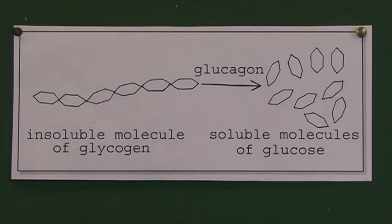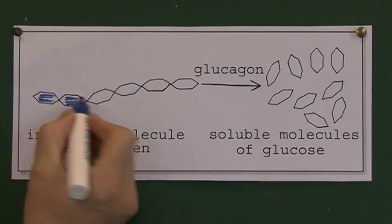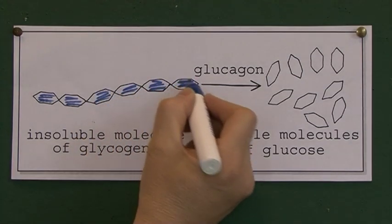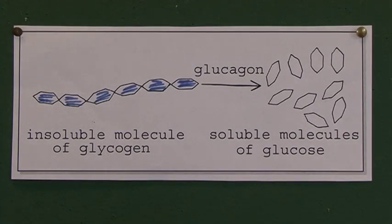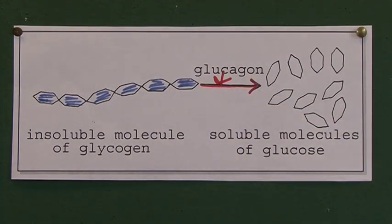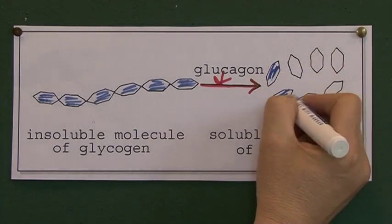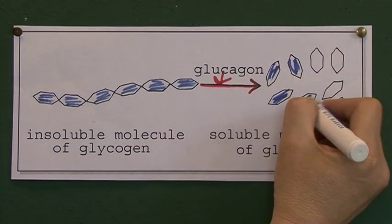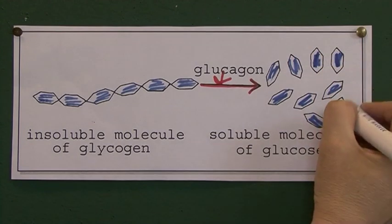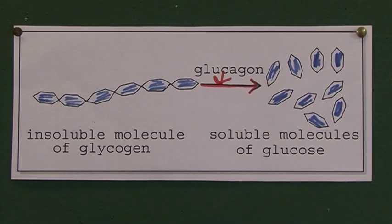This diagram is indicating the activity of glucagon. Here we have lots of insoluble molecules of glycogen — one long molecule of glycogen. That's acted on by the glucagon, and the glucagon will convert the stored glycogen back into individual soluble molecules of glucose. These individual soluble molecules of glucose will go into the blood and tissue fluid, where they will raise blood sugar levels.